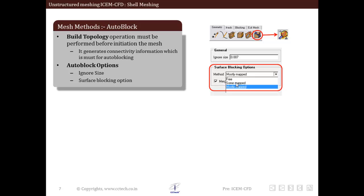The second option is merge map block. This option attempts to group mapped surfaces to form large mesh regions. Now we will see an example related to auto blocking.